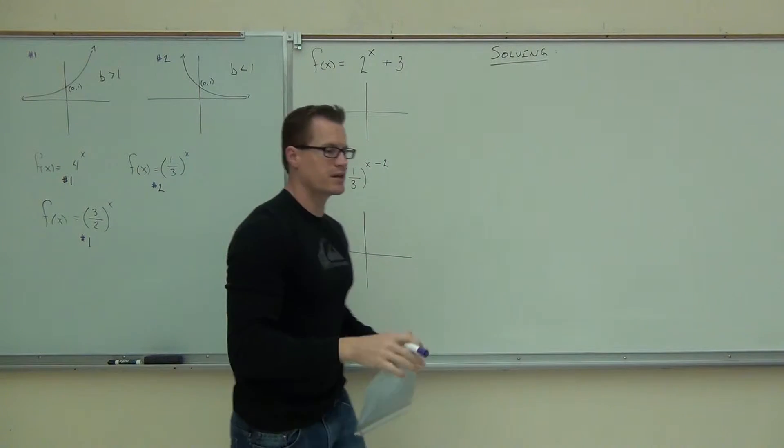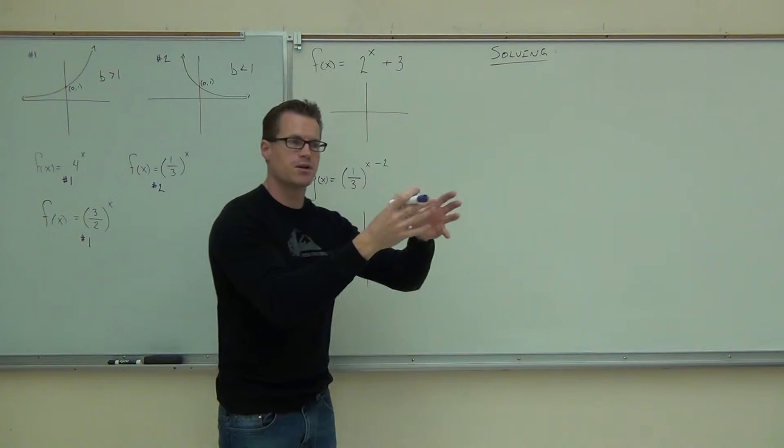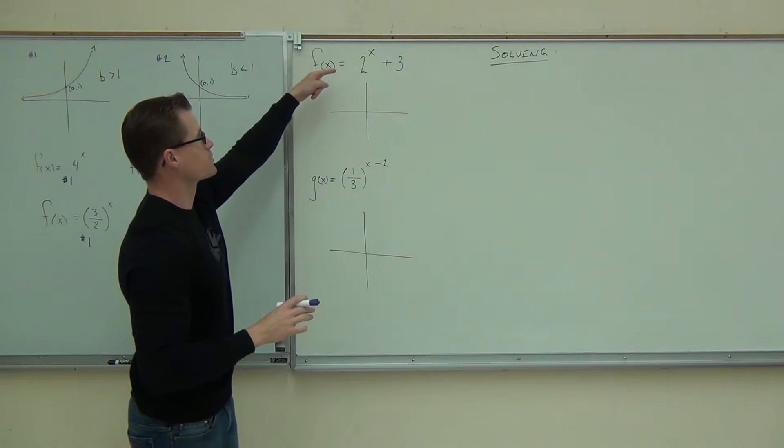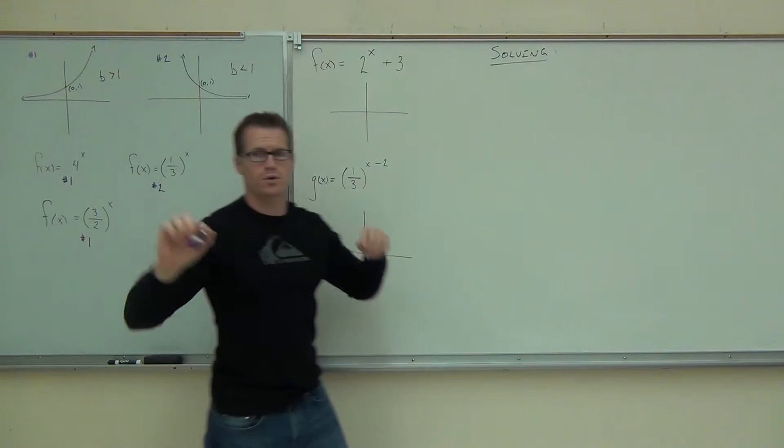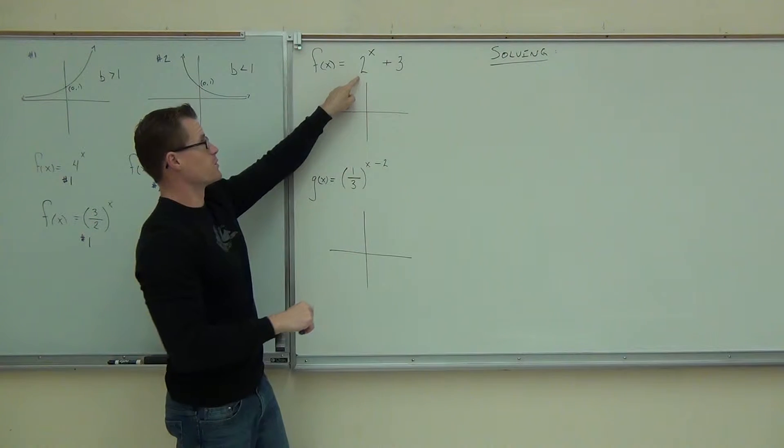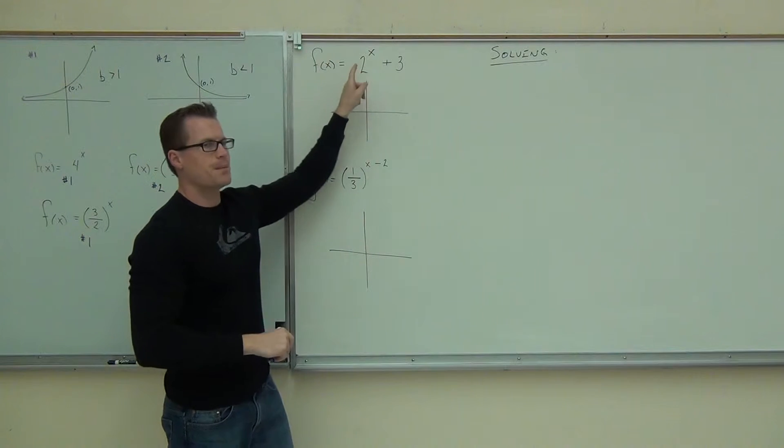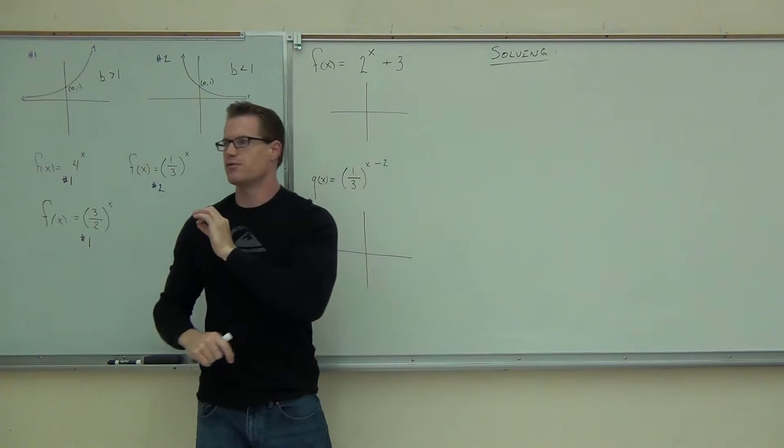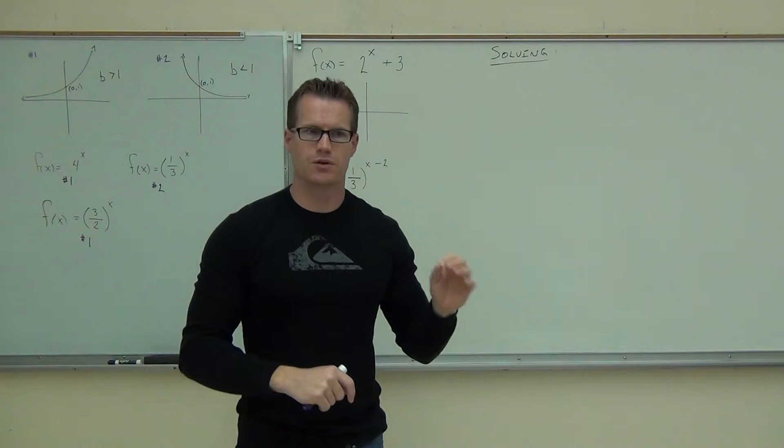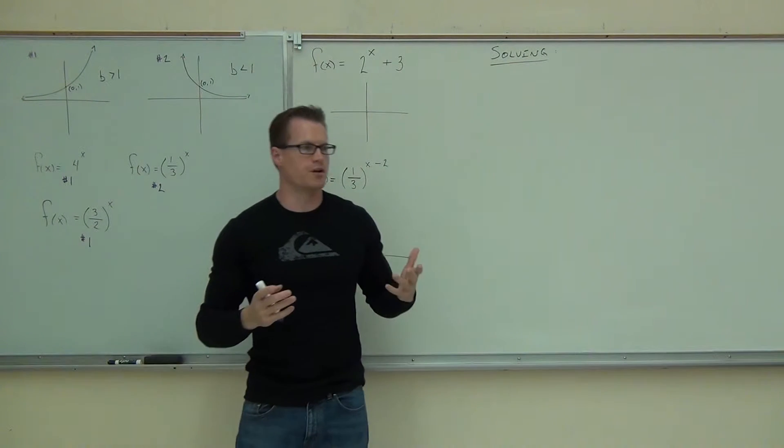Okay, now our last two, I want to show you that just like we did in the last chapter and in chapter 8, we can shift these things around. Let's look at this one. Again, is this more like graph number 1 or 2 from over here? What do you think? Yeah, definitely 1 because that's greater than 1. Are you following me?